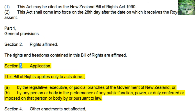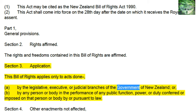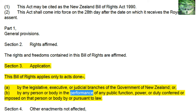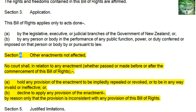Section 3, Application: This Bill of Rights applies only to acts done a. by the legislative, executive, or judicial branches of the Government of New Zealand, or b. by any person or body in the performance of any public function, power, or duty conferred or imposed on that person or body by or pursuant to law.